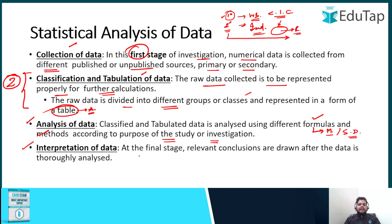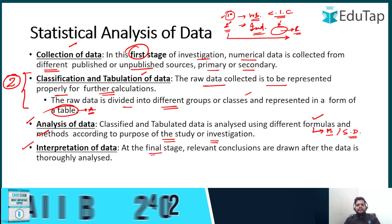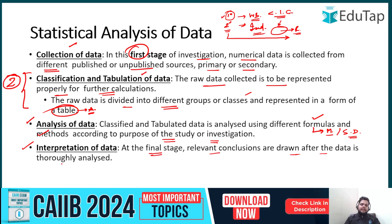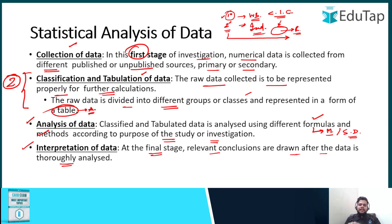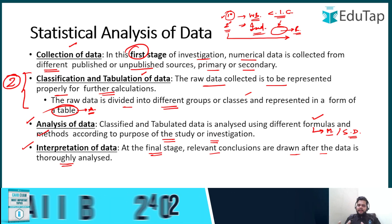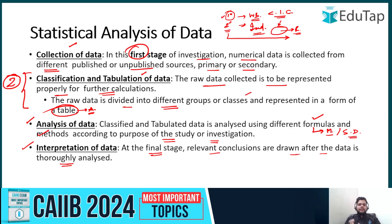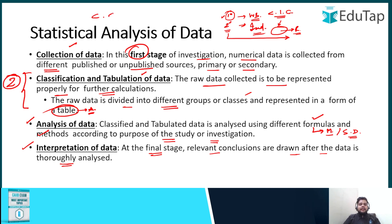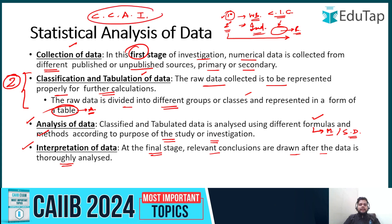Interpretation of data is the final stage, wherein relevant conclusions are drawn after the data is thoroughly analyzed. If you talk about drawing conclusions, it happens at this interpretation of data stage. So the four phases of statistical analysis of data are: Collection, Classification, Analysis, and Interpretation — you can remember them as CCAI.